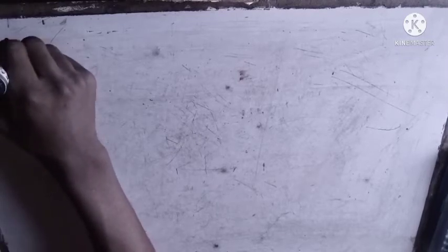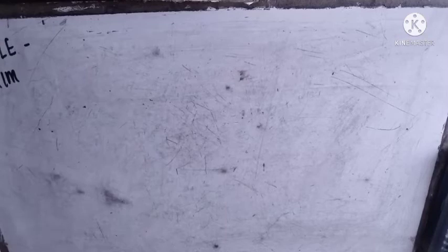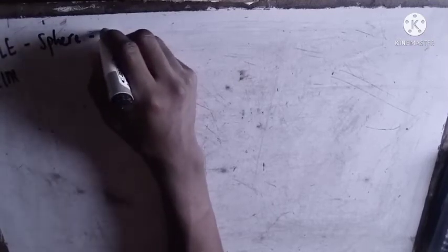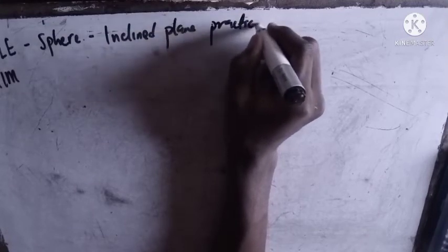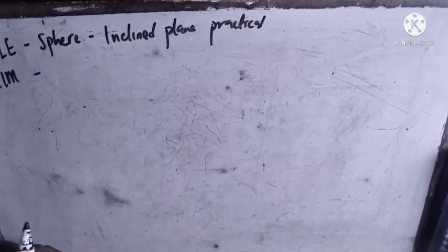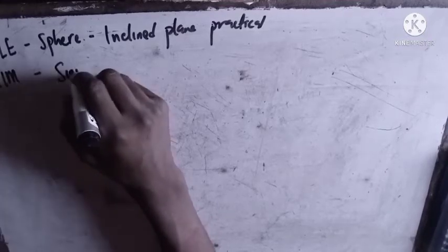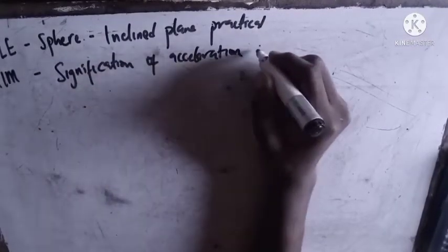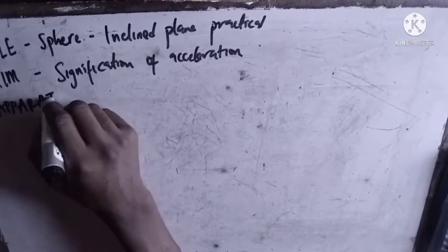Let me teach you how to prepare good physics reports. When you want to prepare your physics reports, at the very beginning the first thing you write is your title - what is the title of your practical. Then the next thing you need to write is your aim. For instance, the title is Sphere Inclined Plane Practical, and the aim is to find the significance of acceleration.